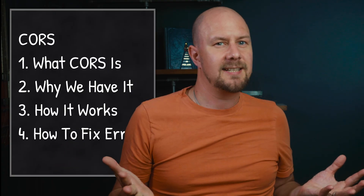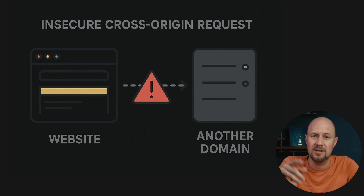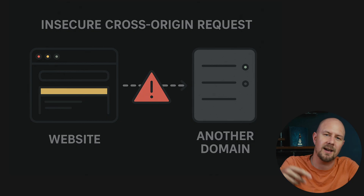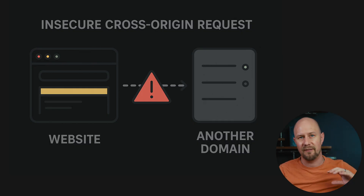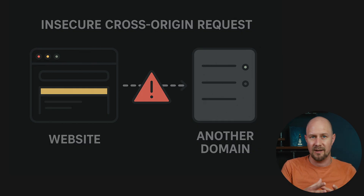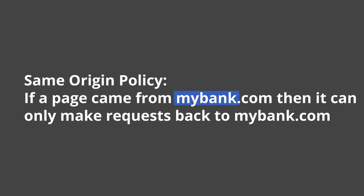Let's start with why it exists. Back in the early days of the World Wide Web, things were a little bit crazy from a security point of view. If you opened a website — for example, example.com — that website could just make requests using JavaScript to any website it wanted to. So your website could communicate with a bank's website or Facebook or anything like that, and it could pull in data from any of those websites. And that was a massive security problem. So browsers introduced something called the same origin policy, which says if a page came from mybank.com, then it can only make requests back to mybank.com.